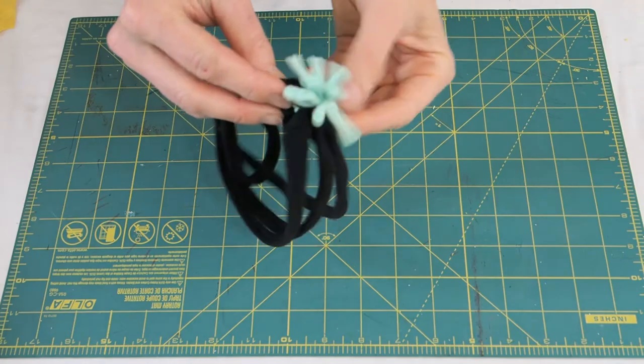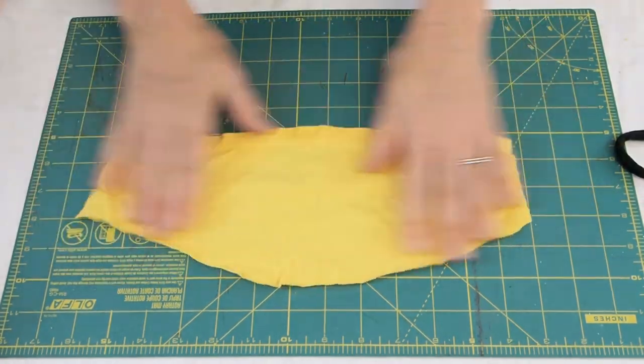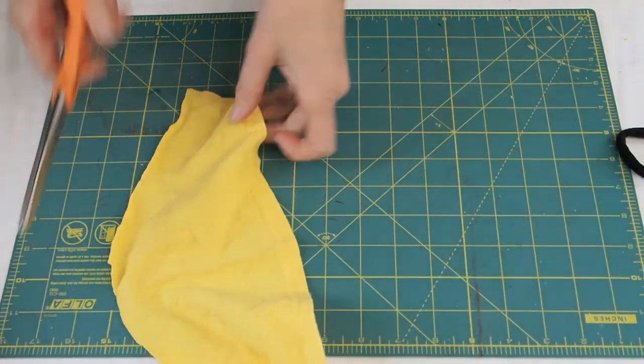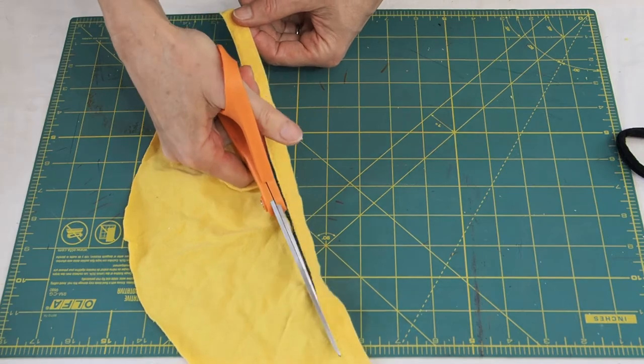Next, we want to make a little poof for our headband just to dress it up. Again, we're going to take another sleeve that we have an excess sleeve laying around. I'm going to cut off that hem. You don't want to use the hem for in the pom poms.